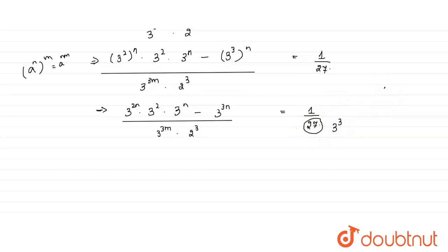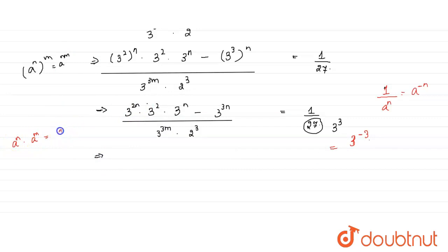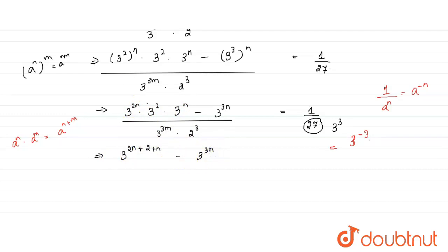Using the identity a to the power n into a to the power m equals a to the power n plus m, since the base 3 is the same for all terms, we can add the powers. So the numerator becomes 3 to the power 2n plus 2 plus n, minus 3 to the power 3n, divided by 3 to the power 3m into 2 cubed, equals 3 to the power minus 3.